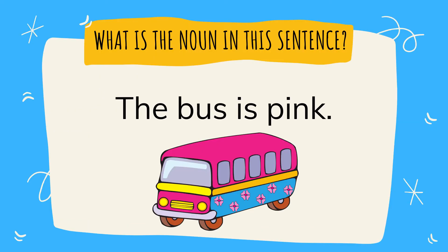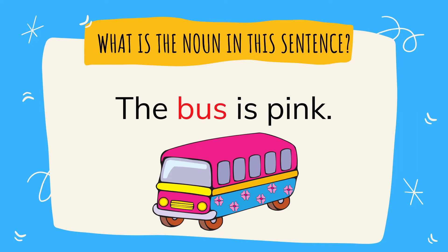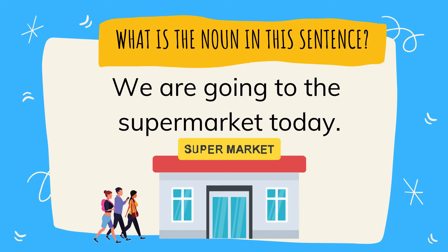The bus is pink. What is the noun in this sentence? The answer is bus. Bus is a thing. We are going to the supermarket today. What is the noun in this sentence? It's the supermarket. A supermarket is a place, so it's a noun.